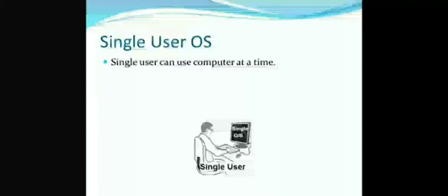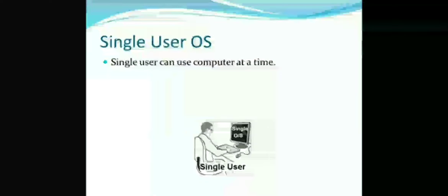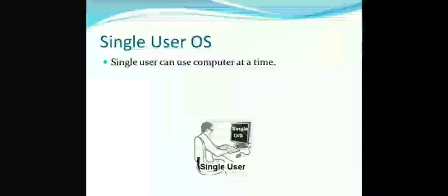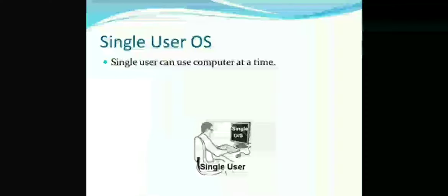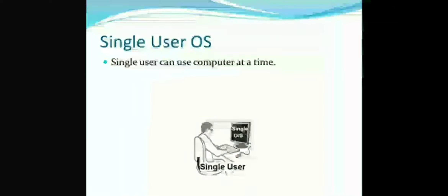For example, the computer you use at home — when you are using your computer, no one else can use it at the same time. You have to get up, leave your computer, and log out. After that, another user can use it. So a single user operating system is simple.